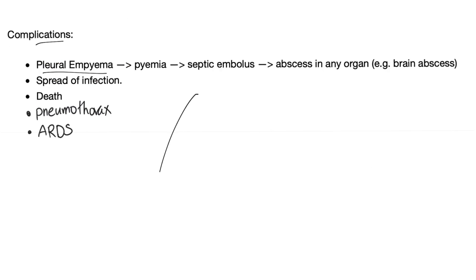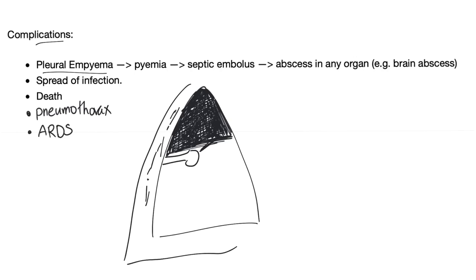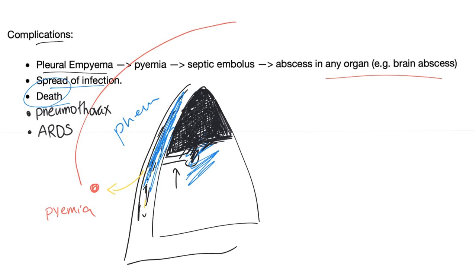Complications of pneumonia include pleural empyema — when pneumonia has complications involving the pleura we call it parapneumonic. A bronchopleural fistula can connect the lung with the pleural space, leading to pus in the pleura (pleural empyema). This pus can form a septic embolus that travels in the bloodstream anywhere, including the brain, forming a brain abscess. Normally the pleura contains a thin film of fluid with no air; a bronchopleural fistula allows air from the lung into the pleural space, causing pneumothorax. Pneumonia can also spread infection systemically, and rupture of a large vessel can lead to internal bleeding and death.